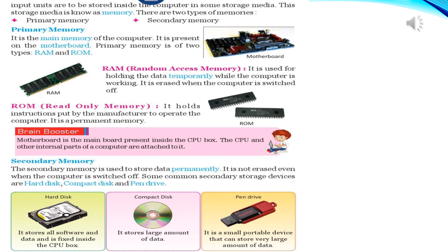Primary memory: It is the main memory of the computer. It is present on the motherboard. Primary memory is of two types: RAM and ROM.